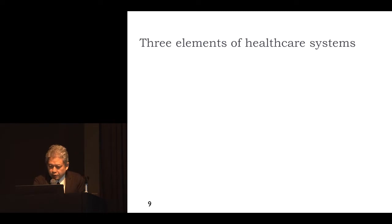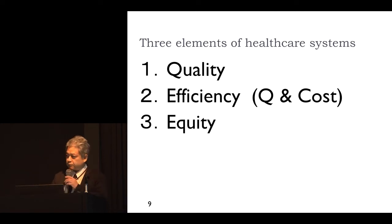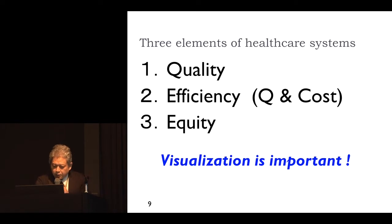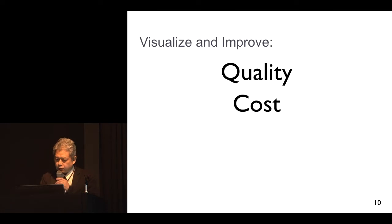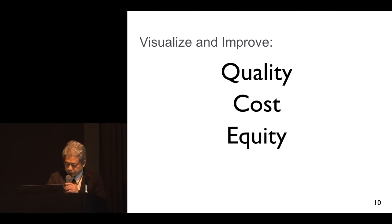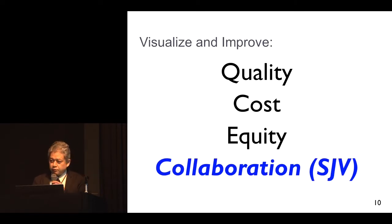For healthcare systems, there are three important dimensions: quality, efficiency or cost, and equity. I'm going to show you some examples of visualization and improvement in quality, cost, and equity. Based on this visualization, we need to transform our healthcare system. For that transformation, intersectoral collaboration is very important, which I will talk about later.